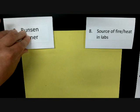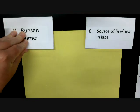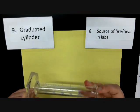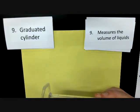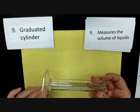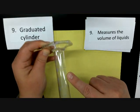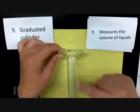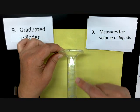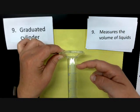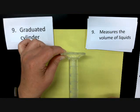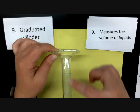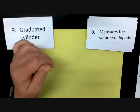Next is a graduated cylinder — I've got a small one so it fits in the camera. A graduated cylinder measures the volume of liquids. The reason why it's called graduated is because there are lines on the side, and when you fill it up those lines tell you the volume in milliliters. We use graduated cylinders to measure volume because it gives a more accurate reading.